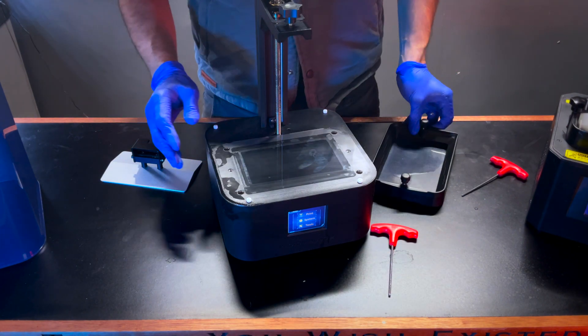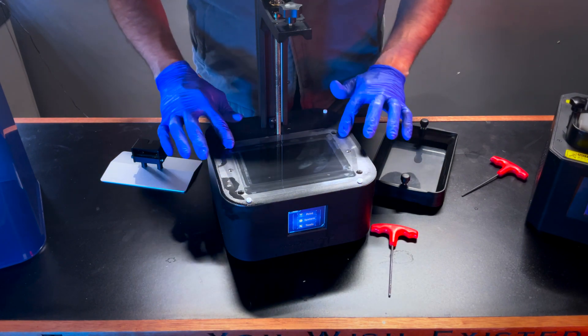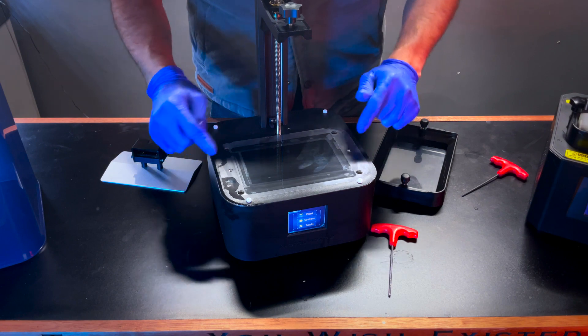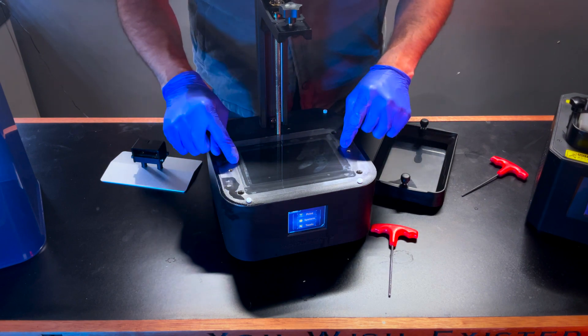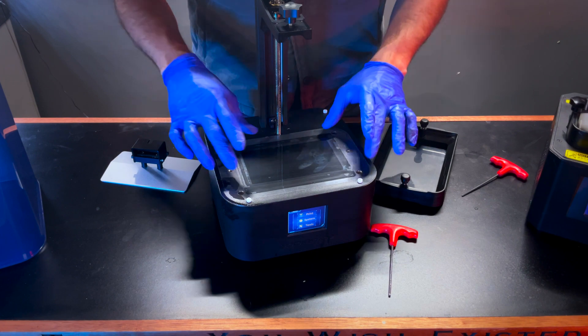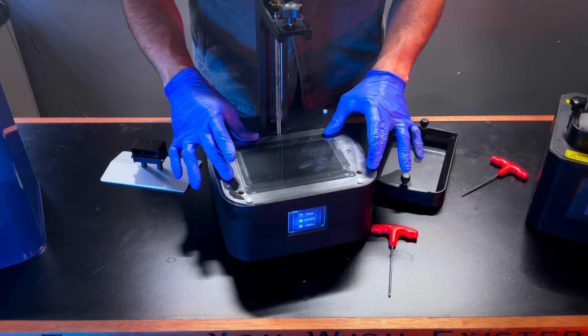Some printers come with and can be purchased aftermarket a screen protector. This helps prevent resin if it spills from getting onto your expensive LCD screen portion of your printer. This, if you're going to run it, needs to be on before you level your build plate.